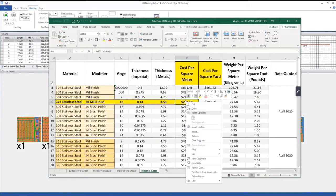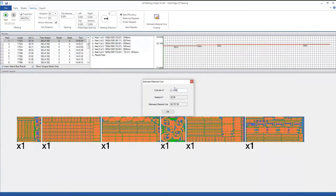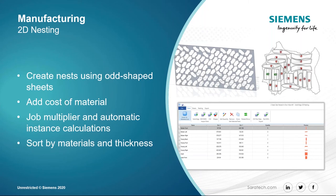This 2D nesting supports multiple sheet sizes — standard sizes stored in the library, and you can easily define custom sizes as well. It's finding the most efficient use of material, and the savings in material costs alone will see a quick ROI. 2D nesting also has a new quick cost estimator — user-defined costs per square meter or yard that you can add, and it quickly generates accurate custom material costs for job cost accounting, quoting, and even inventory. They've enhanced it this year to deal with odd-shaped sheets, like cloth or leather. Adding the cost of material and job multiplier makes it easier to get your job done. You can store it by material or thickness — a very nice feature.